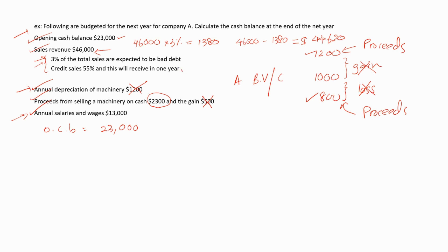The second point says that credit sales are 55% and this will be received in one year's time. So we have to calculate the cash sales for the next year, which is equal to 45%, because 55% of the sales are credit sales. So 45% of $44,620 — this will be the cash sales, equal to $20,079.